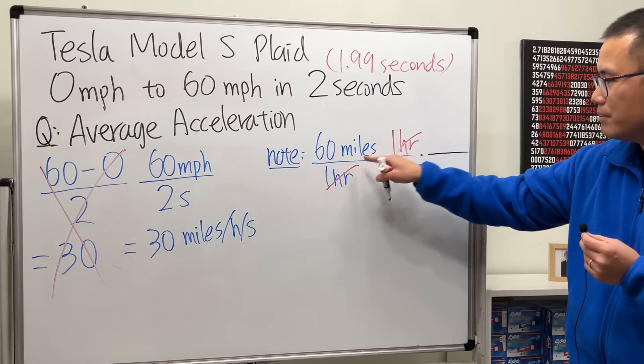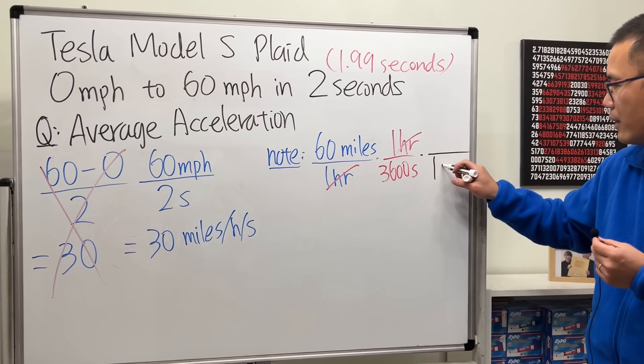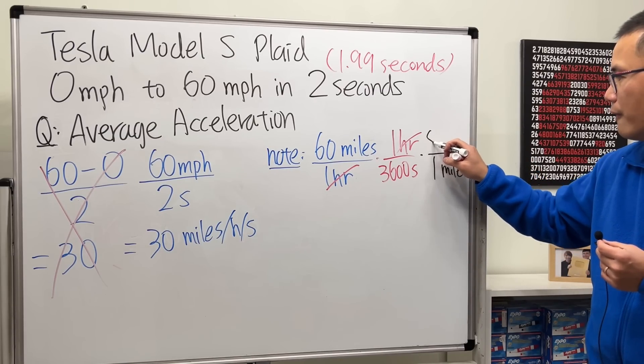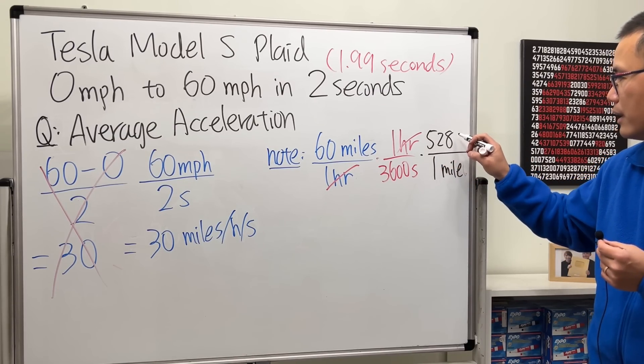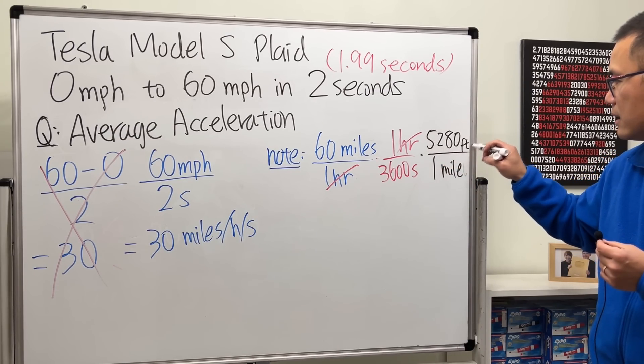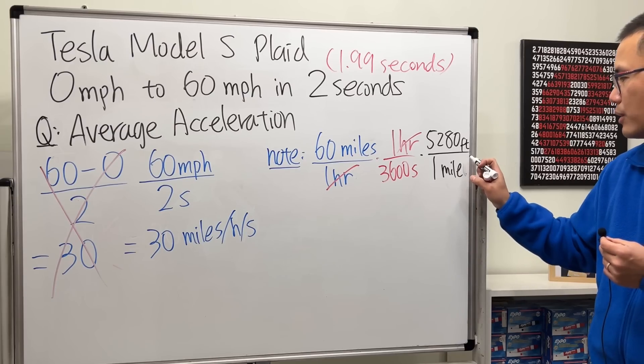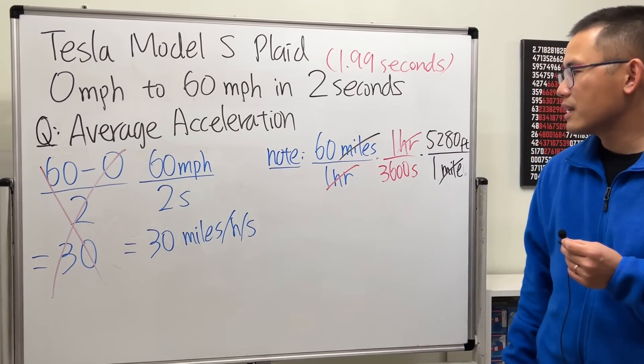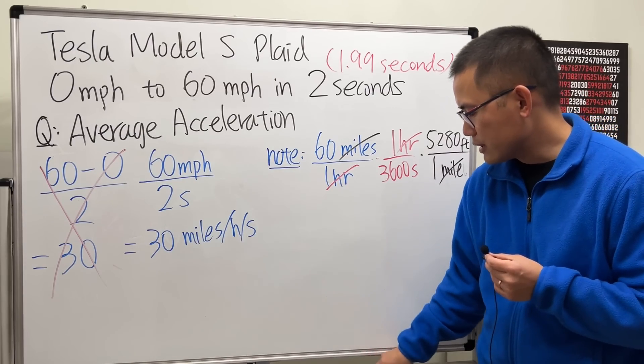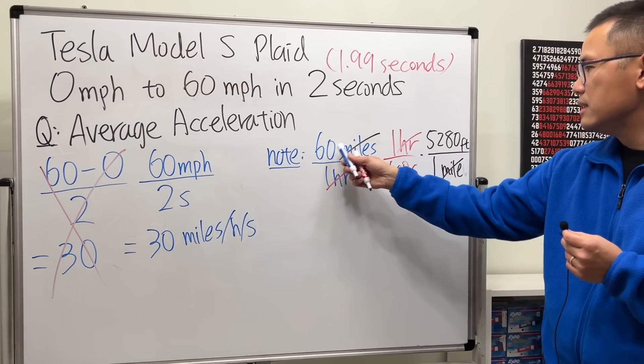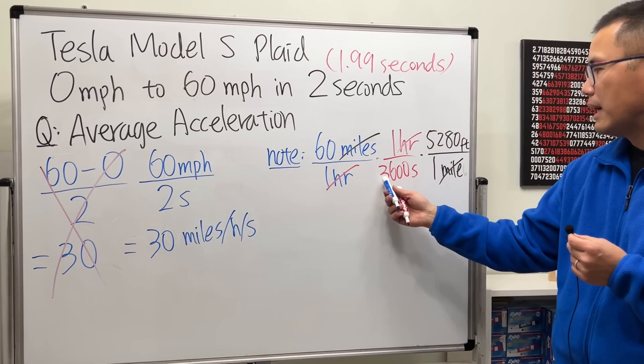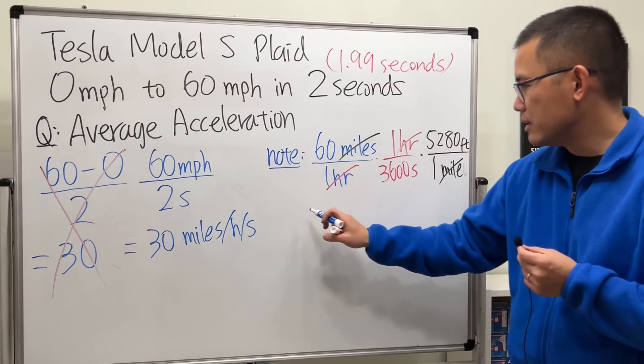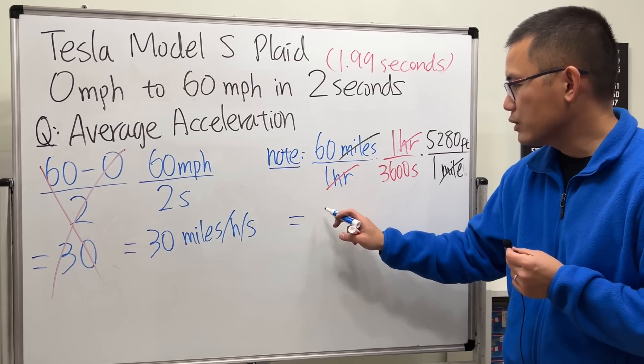We know one mile is equal to 5280 feet, and I put a mile on the bottom so that the miles can cancel. Now all you have to do is just multiply this and this divided by this, the one doesn't matter. So if you work that out you end up with 88 feet per second.